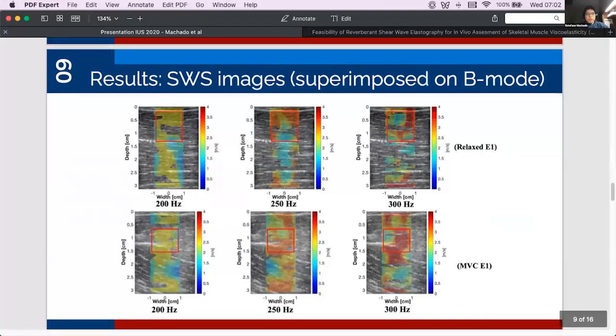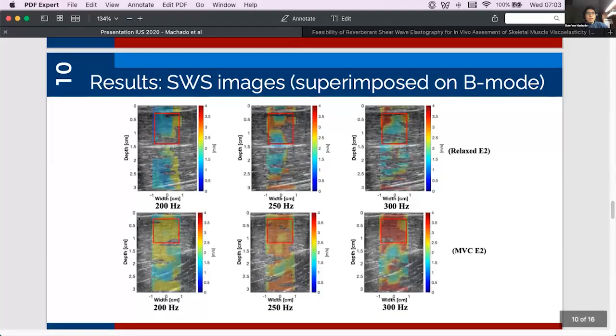So let's take a look at the results. These are the shear wave speed images superimposed on the corresponding B-mode images for the first relaxed and MVC experiments. As you can see there's a high surface area of color pixels in the selected regions of interest indicating that most of the estimated shear wave speed values in these regions present a high resemblance to the theoretical model and thus for us it indicates the presence of a reverberant field. These are the same results for the second experiments.